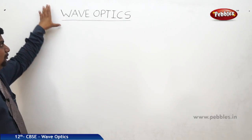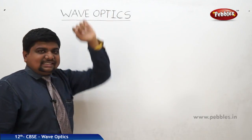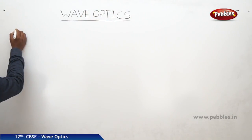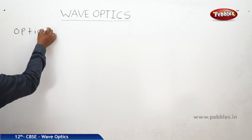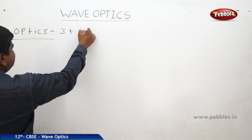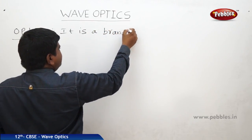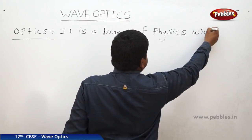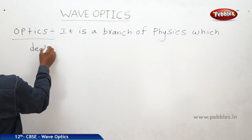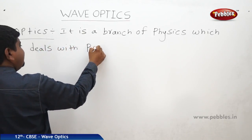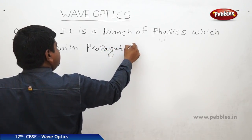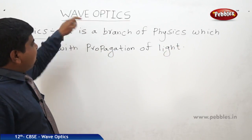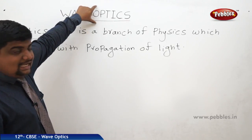We will discuss wave optics. Optics is a branch of physics which deals with the propagation of light. The title of this lesson is wave optics, which means light has the nature of a wave.